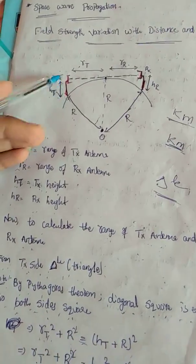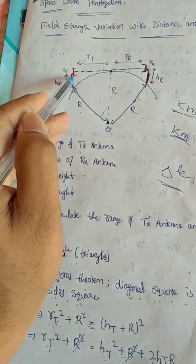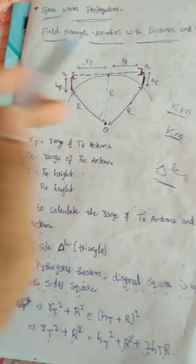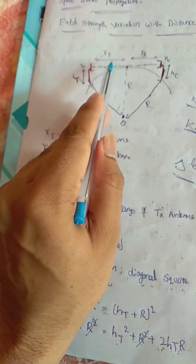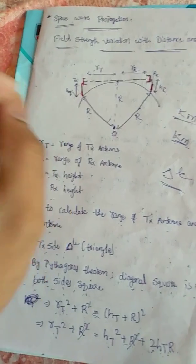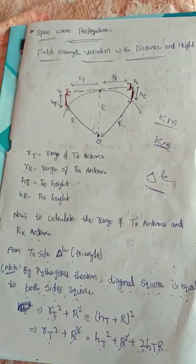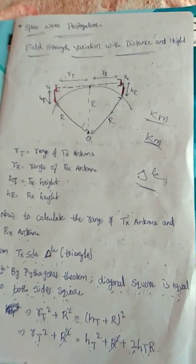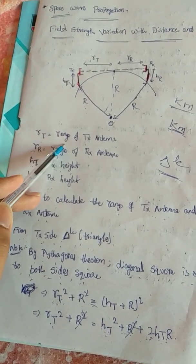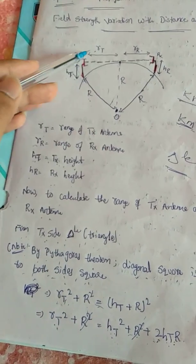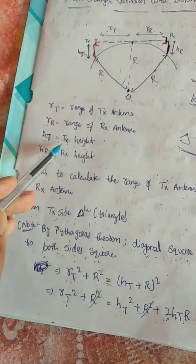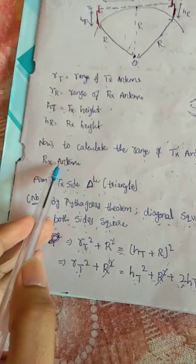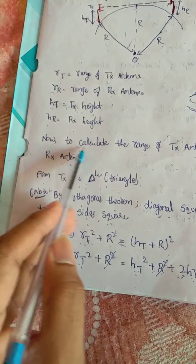These two antennas are line of sight to each other, and the signal is able to just touch the Earth's surface. RT is the range of the transmitter antenna, RR is the range of the receiver antenna, HT is the transmitter antenna height, and HR is the receiver antenna height.